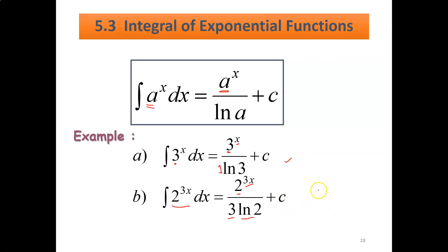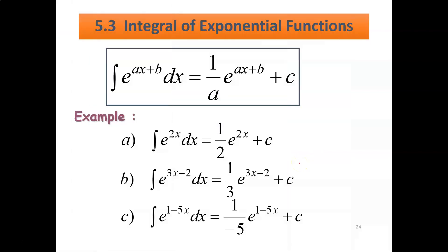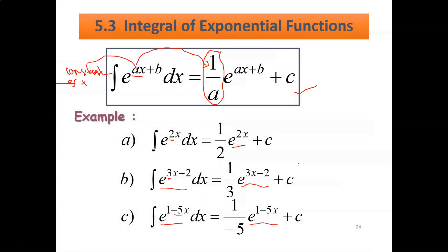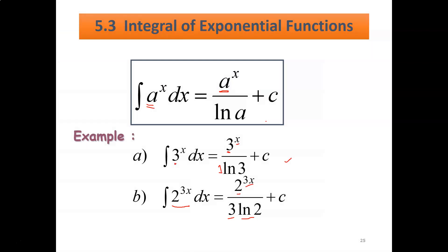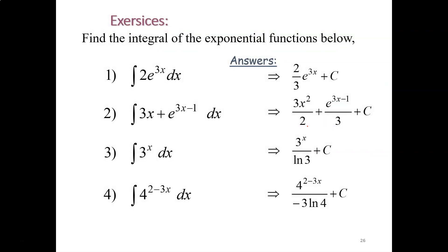So we have learned 3 rules for exponential functions. The first: exponent x — integrate eˣ, get eˣ. The second: exponent ax plus b — gives (1/a)e^(ax+b). The third: aˣ — gives aˣ over ln(a). You can try the exercises on your own and check the answers. For question number 2, you can split it — this part becomes number 1, this part becomes number 2 — and integrate each separately.